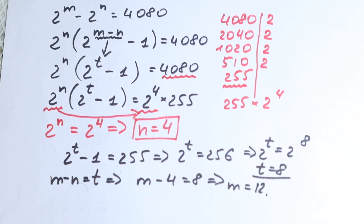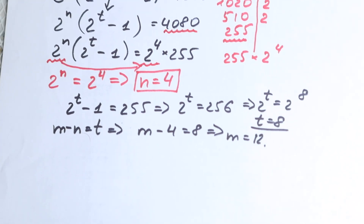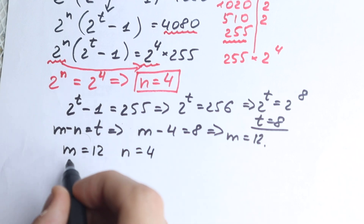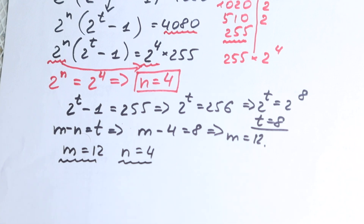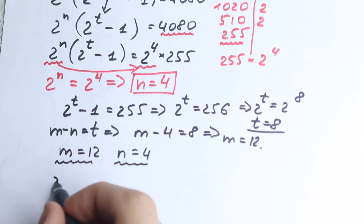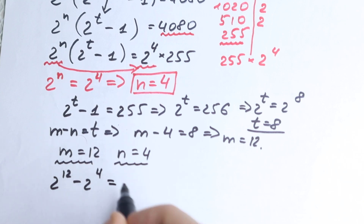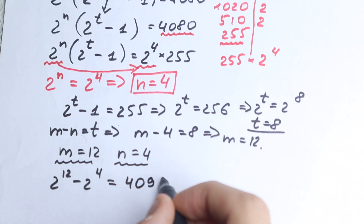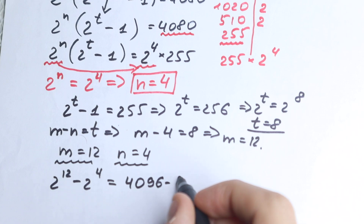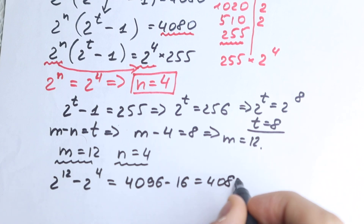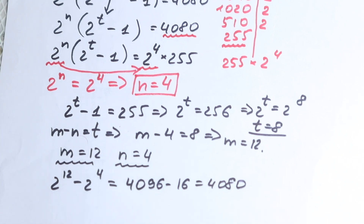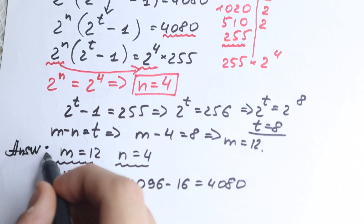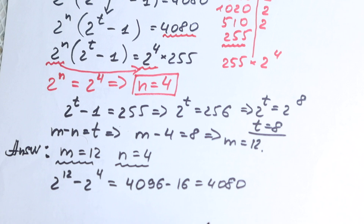Looks like we've solved the question. Let's verify: we have m equals 12 and n equals 4. Checking: 2 to the power 12 minus 2 to the fourth power equals 4096 minus 16, which equals 4080. That's exactly the same as the right hand side. So our answer is m equals 12 and n equals 4.